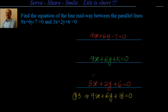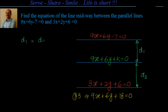Now we will do it in the most simple way. There are many ways you can solve this. We will say that the distance between these two parallel lines should be equal to the distance between these two parallel lines. If 9x plus 6y plus k equal to 0 is midway between 9x plus 6y minus 7 equal to 0 and 9x plus 6y plus 18 equal to 0, then d1 should be equal to d2. This condition will give us the value of k.